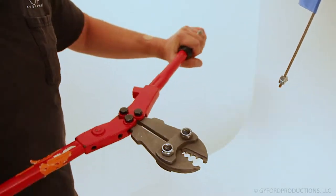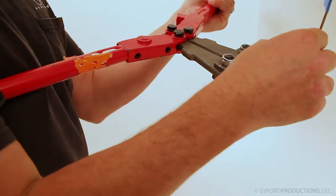Crimp once at the top, rotate the crimpers 90 degrees, and crimp again at the bottom.